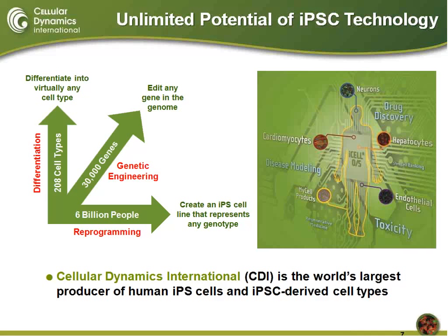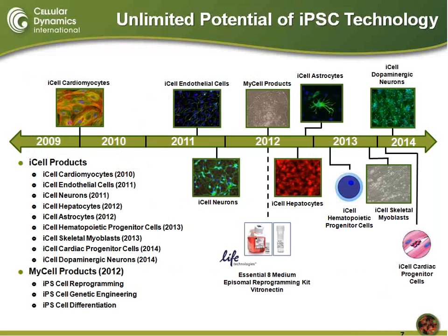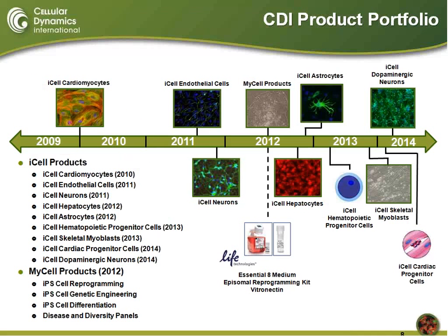We are now the world's largest producer of human iPSC cells and iPSC-derived cell types. Here is a snapshot of the many different iPSC-derived cell types that make up our product portfolio. It started back with the launch of iCell cardiomyocytes nearly five years ago. We have lots of great data on each of these different cell types, but today we are just going to be focusing on iCell neurons.